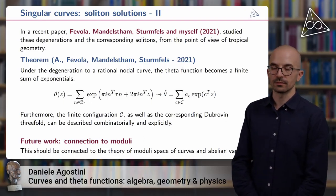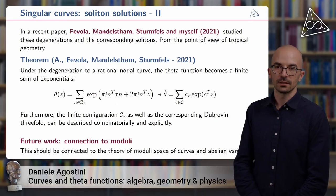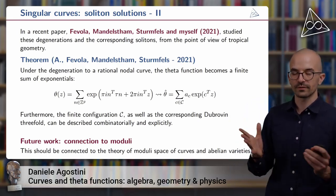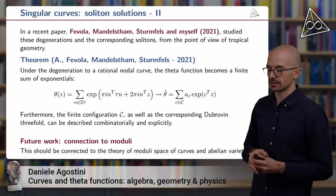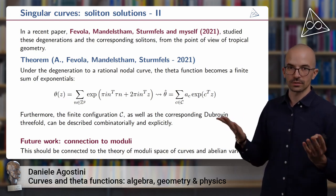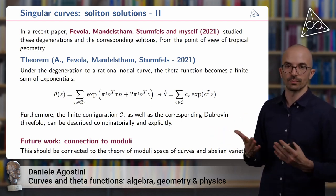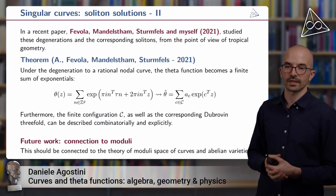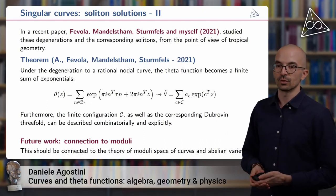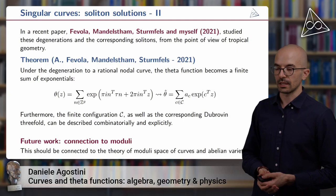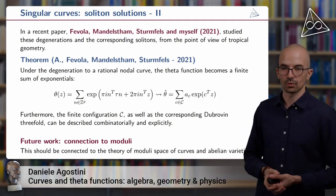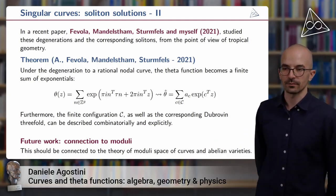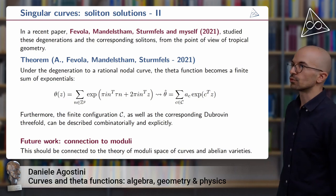will degenerate to a finite sum of exponentials which depends on a finite configuration of vertices C. Furthermore, we also show that both the finite configuration C as well as the corresponding Dubrovin threefold, so the variety that classifies all possible KP solutions, so all possible soliton solutions you can get from that, they can be described both combinatorially and explicitly, so we have an effective algorithm to describe them.